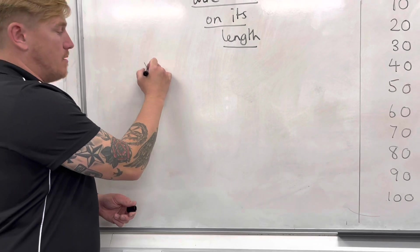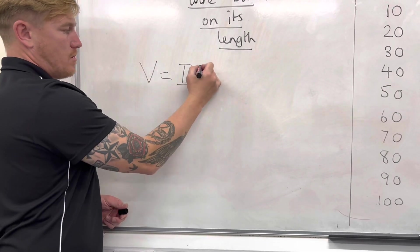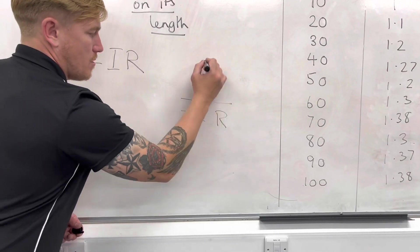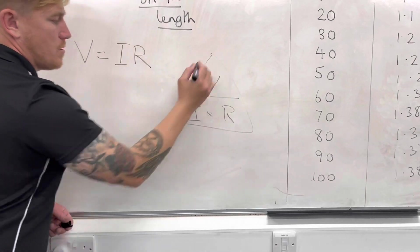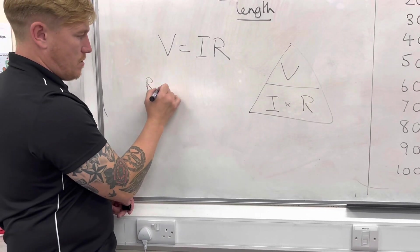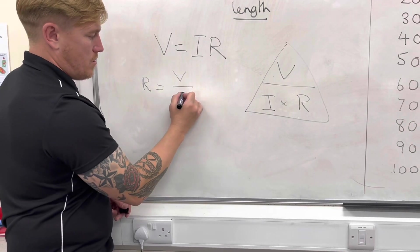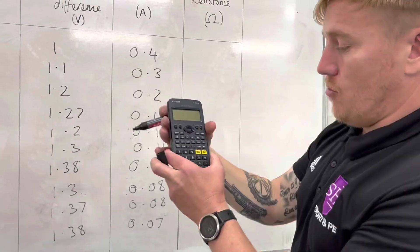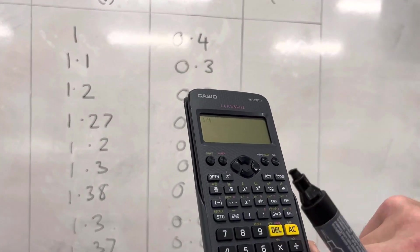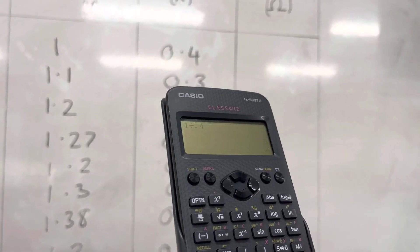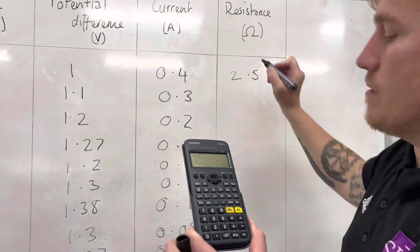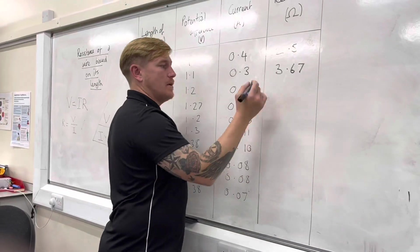So using the formula, potential difference equals current times resistance — or using our triangle — current equals potential difference over resistance, or resistance equals potential difference over current. I'm now going to calculate the resistance for all of my values.